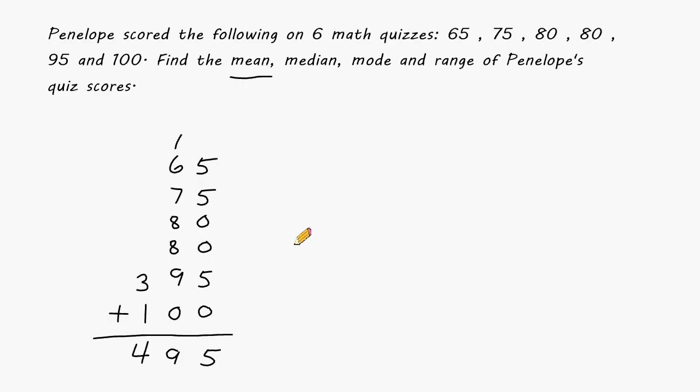So for the mean, after you find the sum of all of the numbers, you must take that total, which in this case is 495, and divide it by how many scores you added together. So in this case, we have to divide our total by 6.